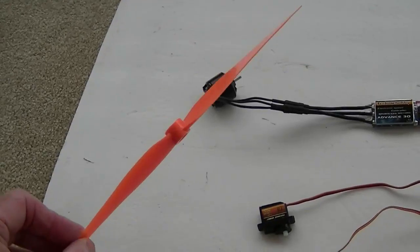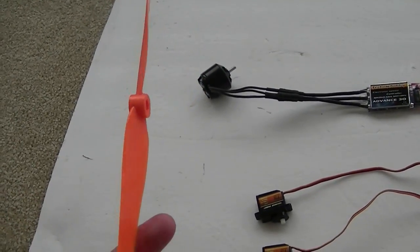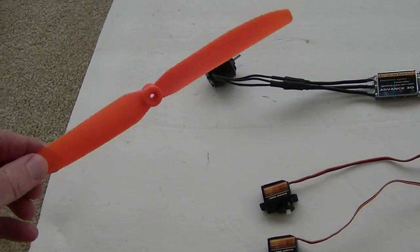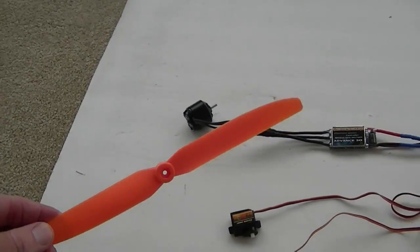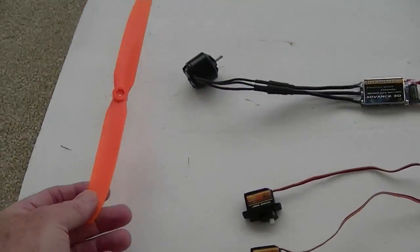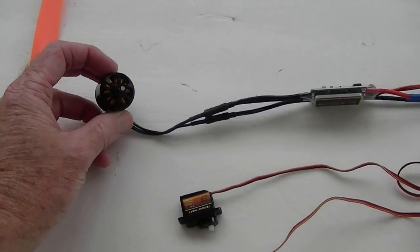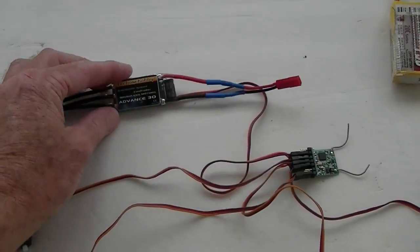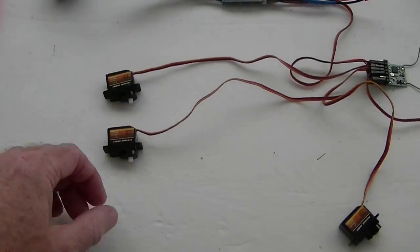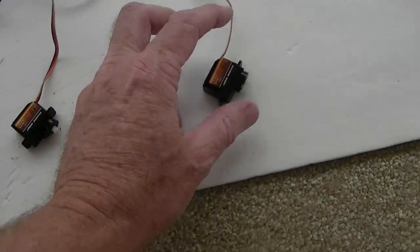It turns out the prop supplied with the airplane was actually a 9x5, not a 9x6. I made a mistake earlier on that. So we got a 9x5 prop and they also supplied the motor, a 30 amp ESC, four TEC-1 servos.